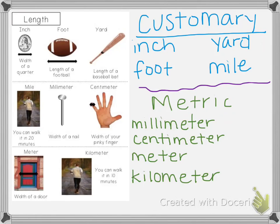You can see on your chart some different benchmarks that can help you remember the sizes. An inch is about the width of a quarter. A foot is about the length of a football. A yard is about the length of a baseball bat. And a mile — you can walk it in about 20 minutes.